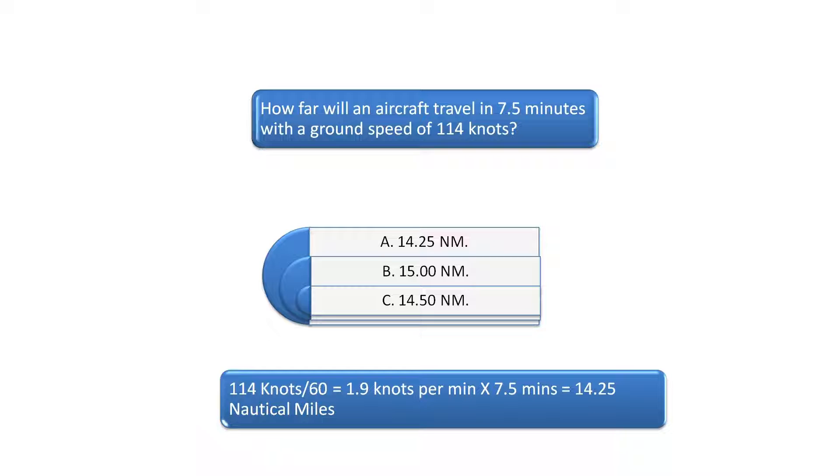To solve this problem just divide the ground speed of 114 knots by 60 to find the knots per minute traveled. 114 divided by 60 equals 1.9. 1.9 multiplied by 7.5 minutes equals 14.25 nautical miles. The correct answer is A.